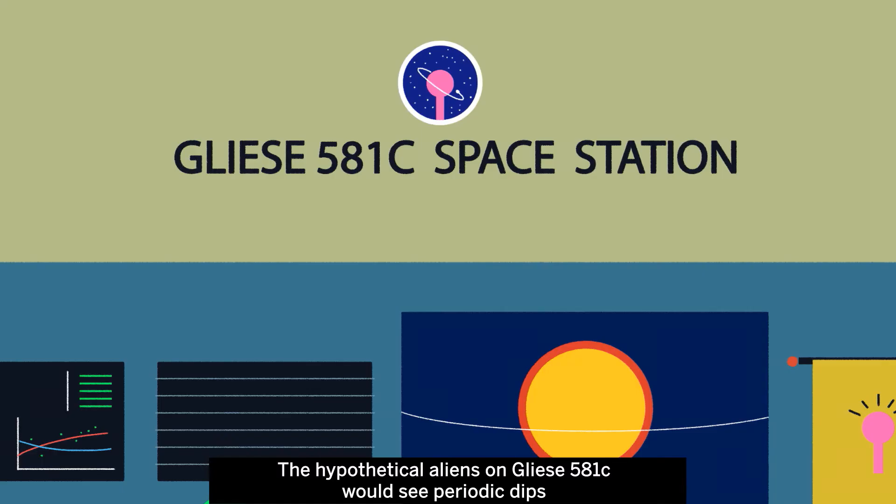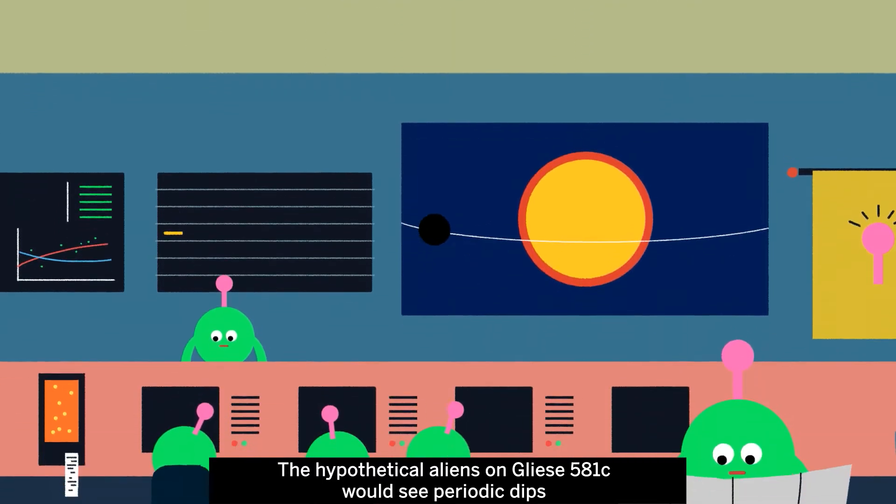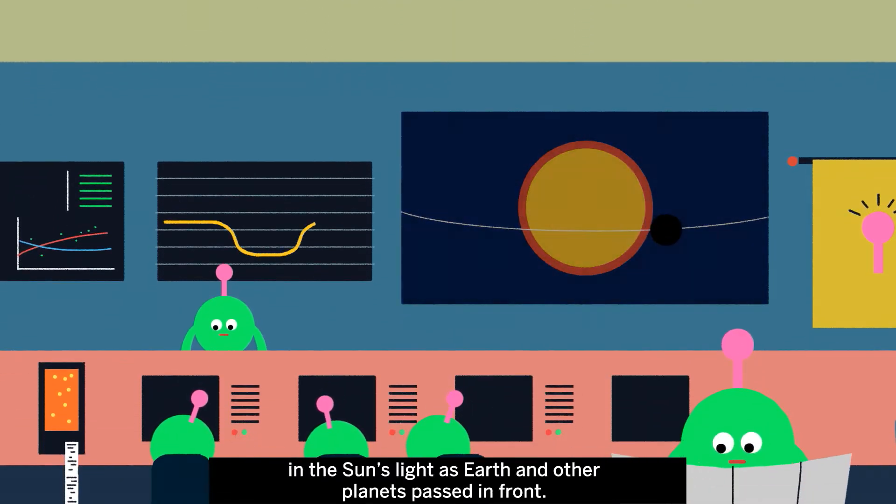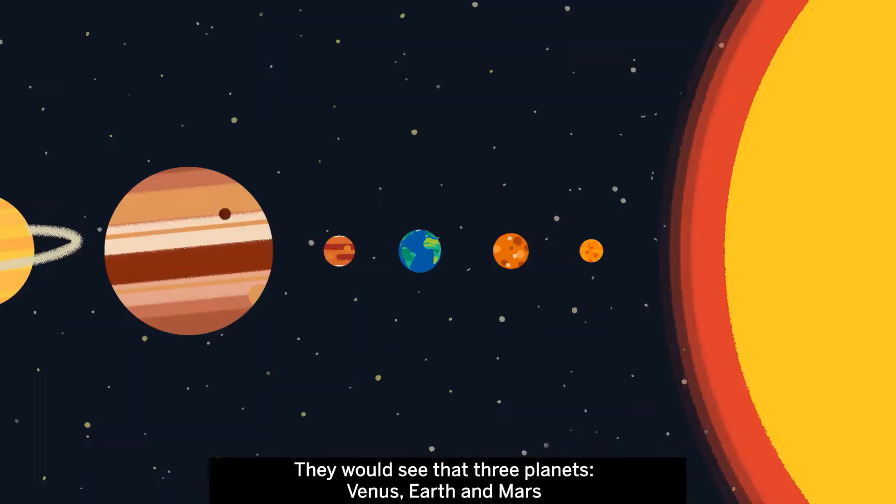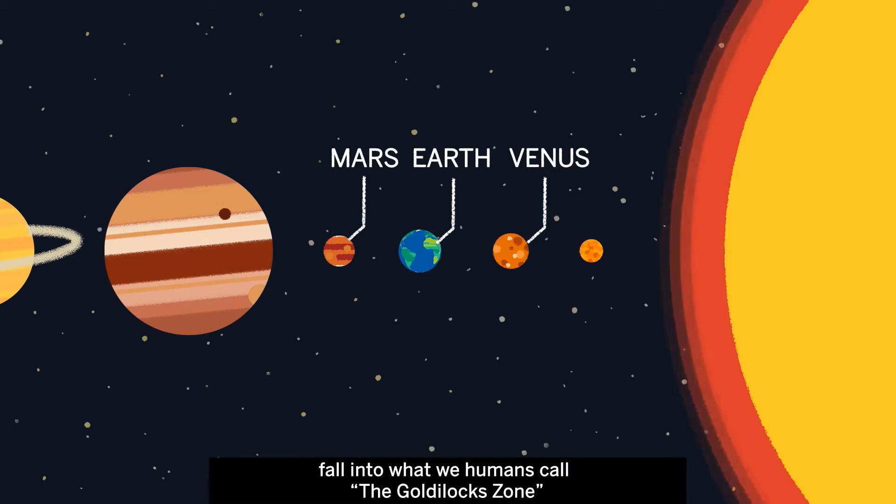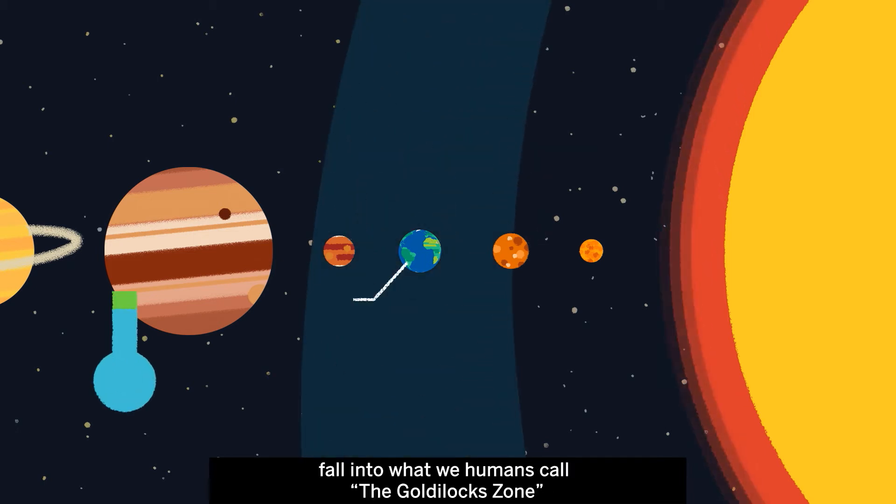Imagine that there are aliens on a planet orbiting a distant star looking for us. The hypothetical aliens on Gliese 581c would see periodic dips in the sun's light as Earth and other planets passed in front. They would see that three planets – Venus, Earth and Mars – fall into what we humans call the Goldilocks zone.